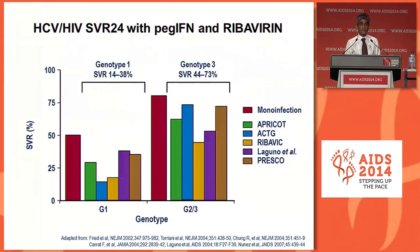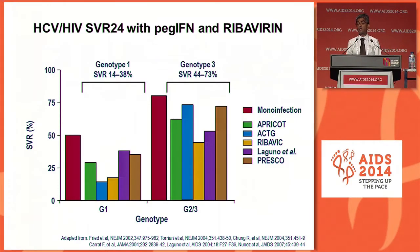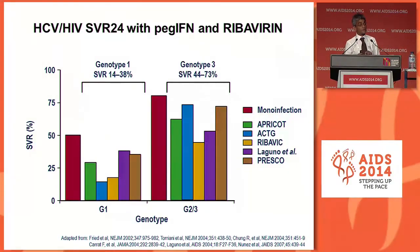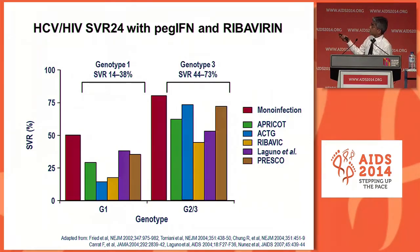Up until recently, our standard of care was pegylated interferon and ribavirin. Looking at a number of studies comparing SVR24 rates with peg-interferon and ribavirin in co-infected patients versus mono-infected patients, co-infected patients don't do so well. Not only do they not do so well, but it's those patients with genotype 1 disease that have the biggest problem in terms of sustained virological responses.